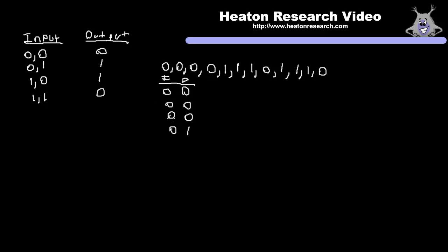This is a problem with a normal feed-forward neural network — these inputs could come in any order. What would be the correct output for a zero? It could be a zero or a one. To really know what the output should be, whether it's a one or a zero, it's all a matter of context. Feed-forward neural networks don't have any context. So a feed-forward neural network could not use this training data, because there is a disparity: sometimes a zero as input means a zero output, sometimes it means a one.